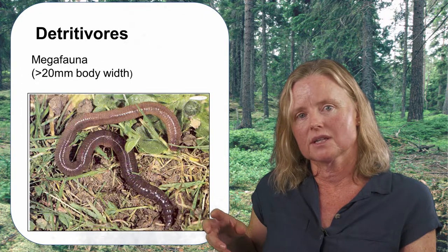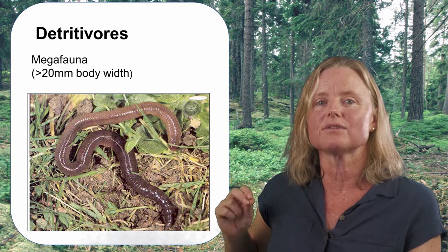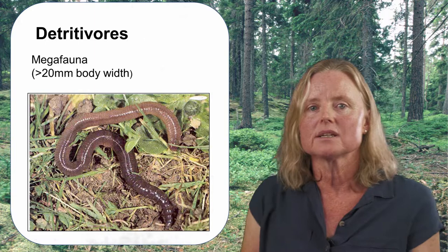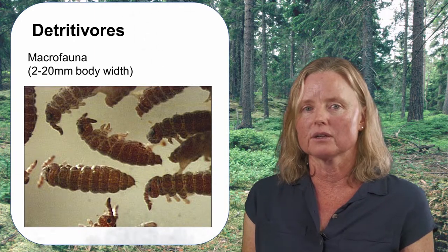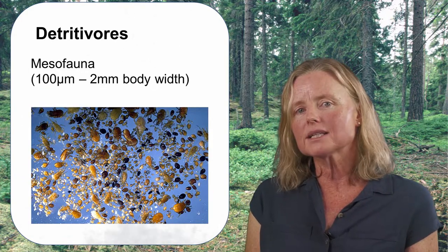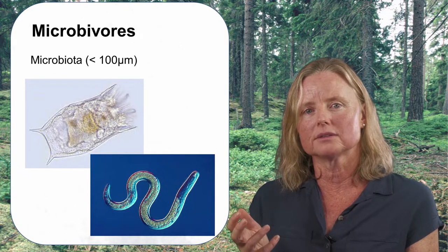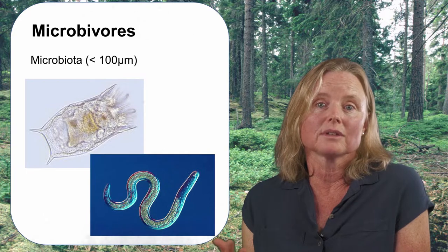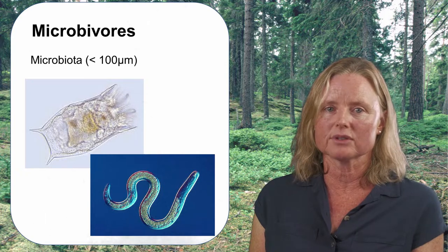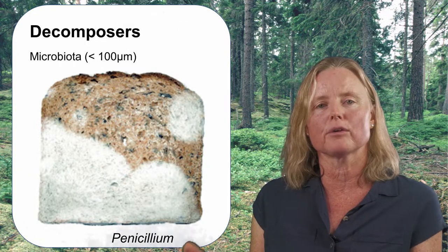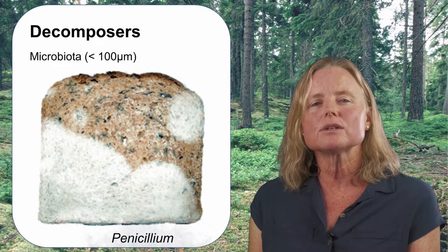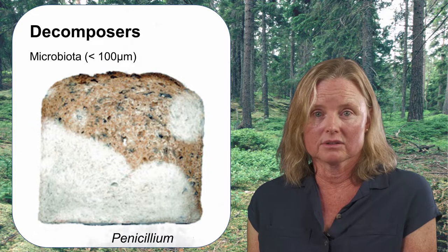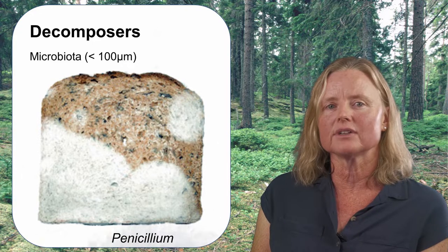Moving on to the other decomposers: after carrion feeders, animals consume both detritus and its microbiota, starting with the megafauna such as earthworms and dung beetles. Going smaller, we have macrofauna within a centimetre range like springtails, and mesofauna such as many mites. Then there are microvores — animals that feed exclusively on microbiota, able to digest bacteria and fungi but not detritus itself, including rotifers, some species of fungi and nematodes. Finally come the microbial decomposers: a diverse set of microbiota including fungi, archaea and bacteria, where physical changes to the substrate can be seen, such as this old piece of bread covered in the fungus Penicillium.